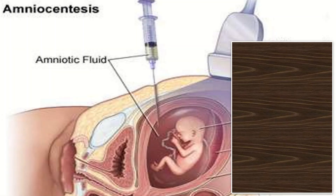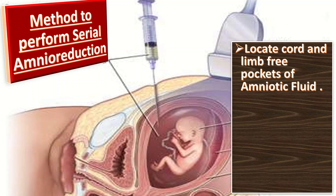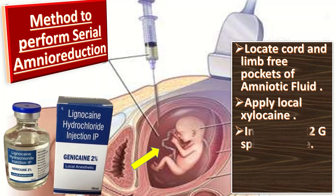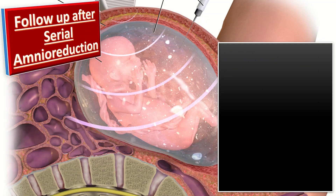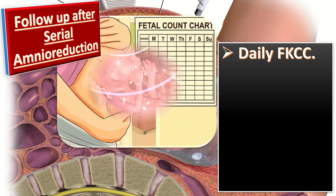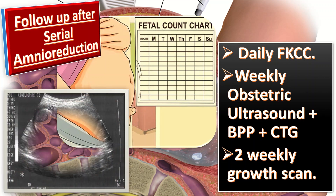How to perform serial amnioreduction: it is performed under ultrasound guidance. Locate the cord and limb-free pockets of amniotic fluid. Apply local xylocaine to the abdomen. Insert a 20 to 22 gauge spinal needle via the transabdominal route under aseptic technique into that cord or limb-free pocket, and start draining the amniotic fluid until the amniotic fluid index or maximum vertical pool reaches the upper limit of normal. For follow-up, advise daily fetal kick count, and do weekly obstetric ultrasound plus biophysical profile plus CTG, and two-weekly growth scans.